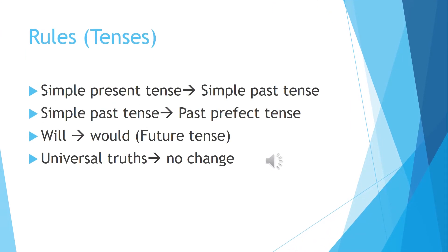Let us see the rules of changing from direct to indirect speech. The first rule is simple present tense changes to simple past. The second rule is simple past tense changes to past perfect tense. The third rule is will changes to would in future tense. Everything else will remain the same.